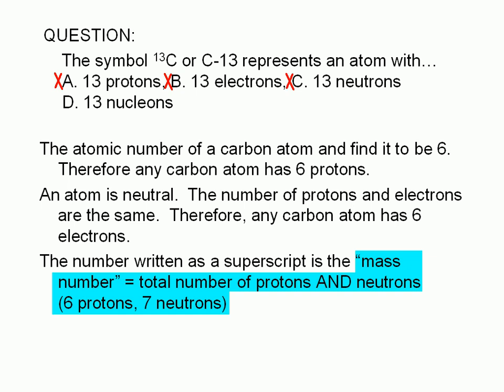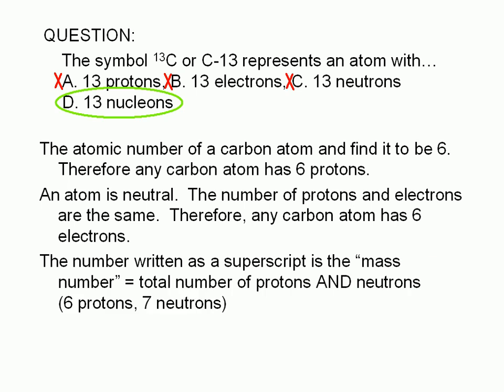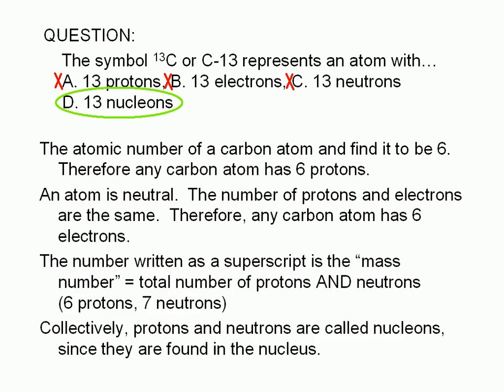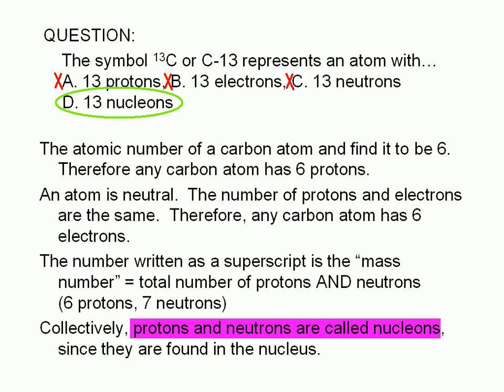Therefore, choice D must be the correct answer. Indeed it is. Since protons and neutrons are found in the nucleus, they are collectively referred to as nucleons. There are 13 nucleons in carbon-13: 6 of those nucleons are protons, and the other 7 are neutrons.